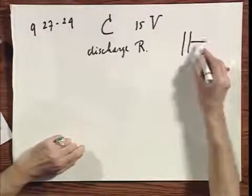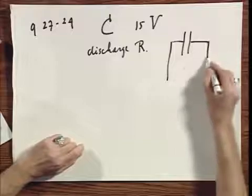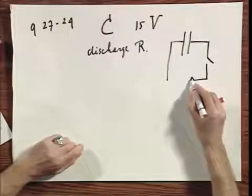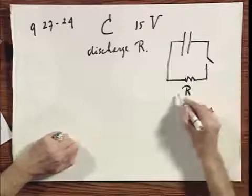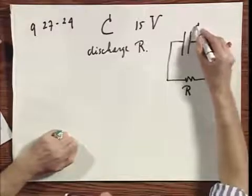So here is that capacitor, it's fully charged, switch here, resistor here R, throw the switch. At first there's plus 15 volts here.